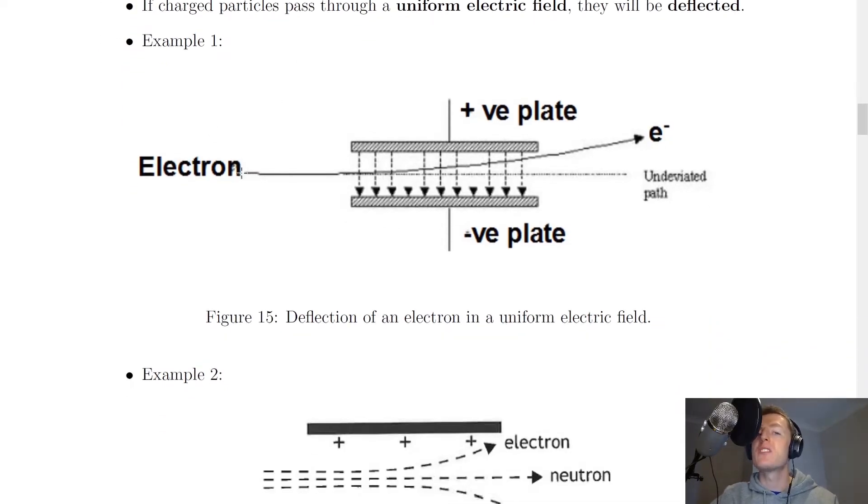So if we have an electron which has a negative charge on it, you'll notice if it passes between these two oppositely charged parallel plates, a positive charge on the top and a negative charge on the bottom, with a uniform electric field in the middle pointing downward.